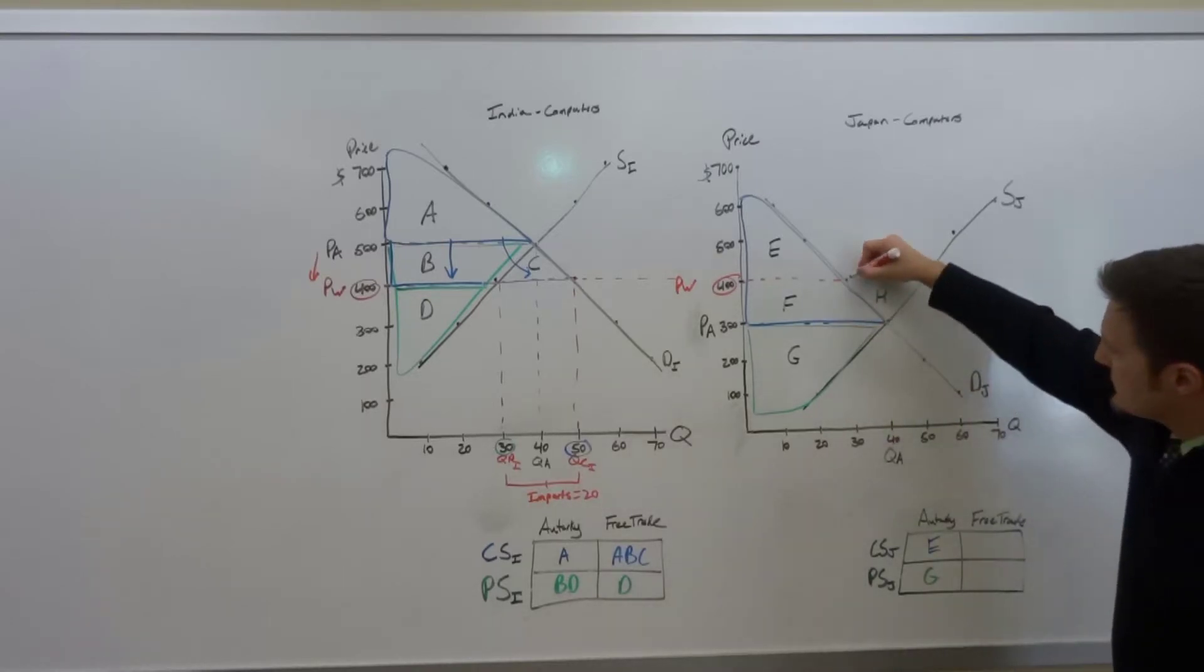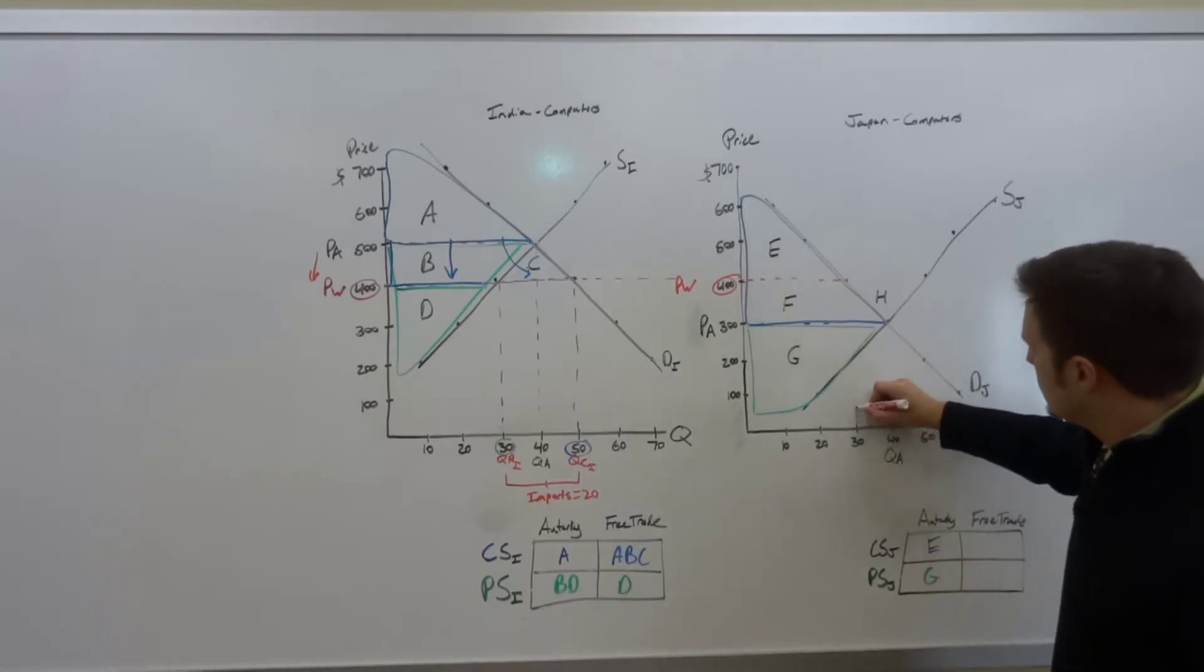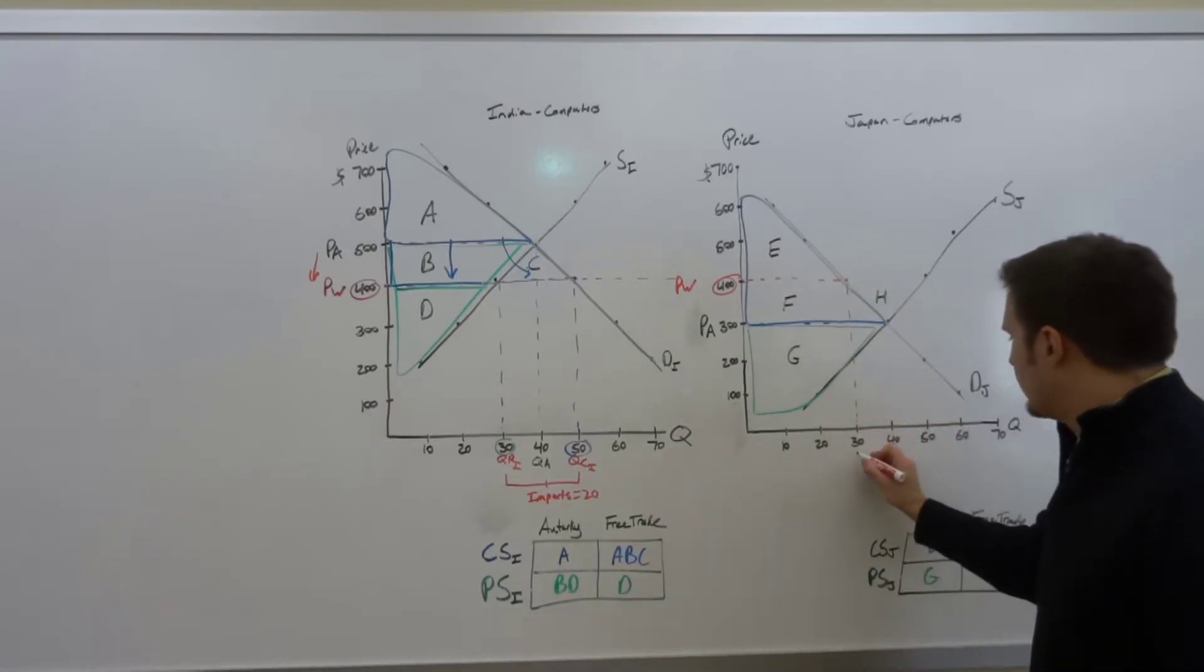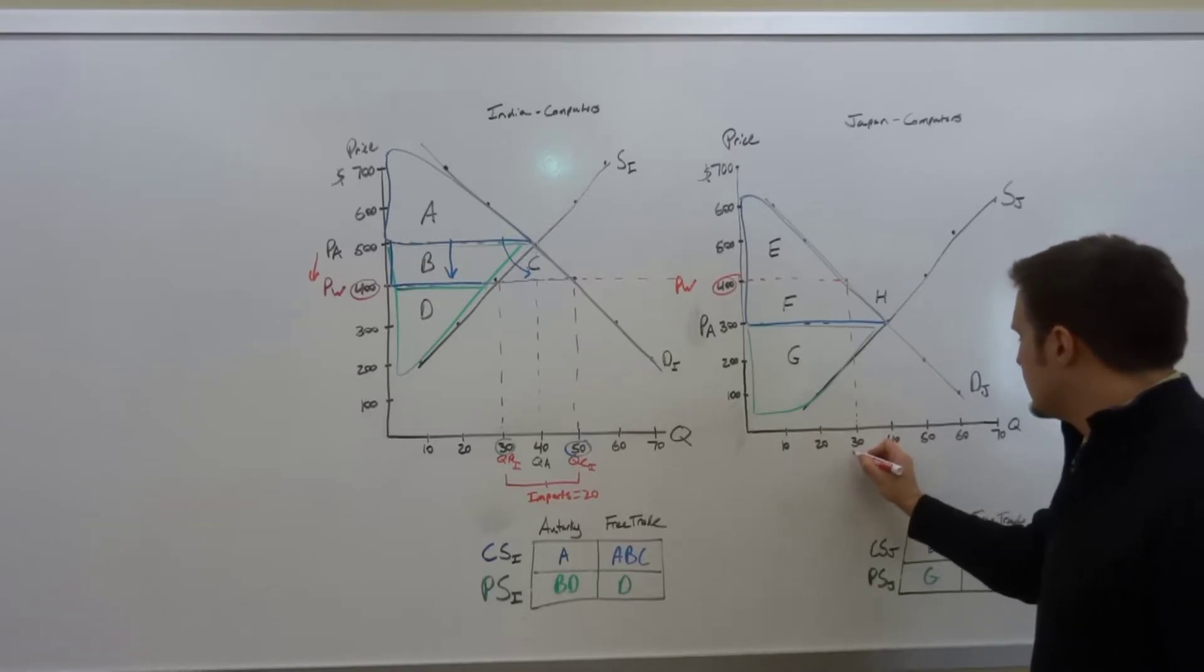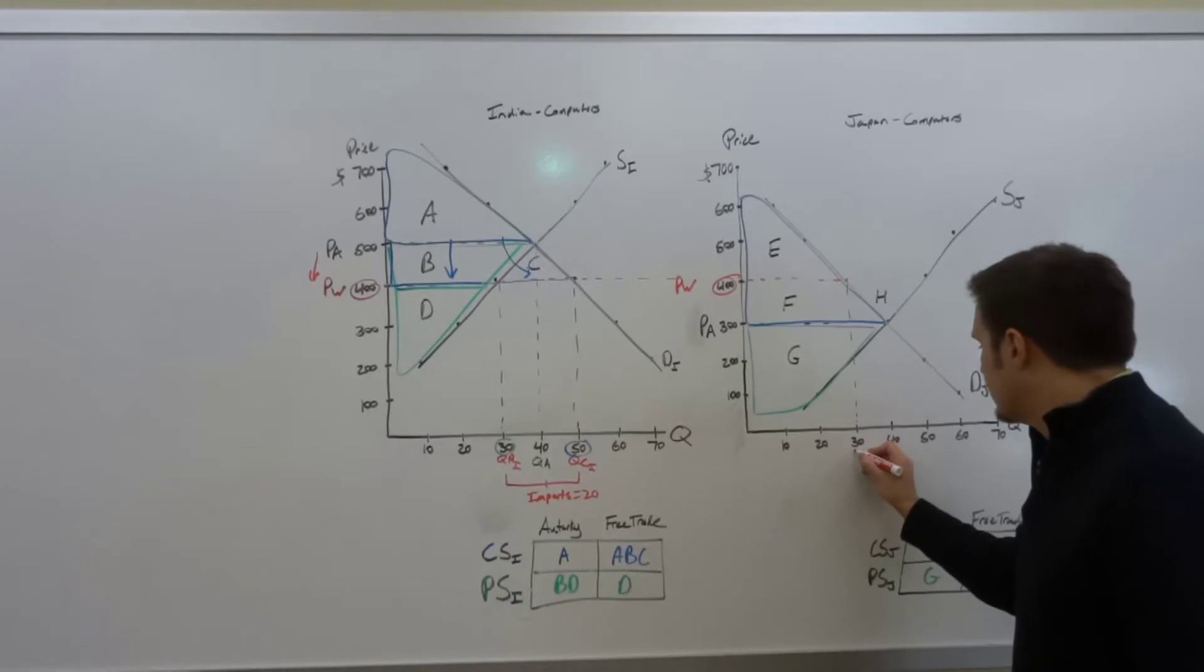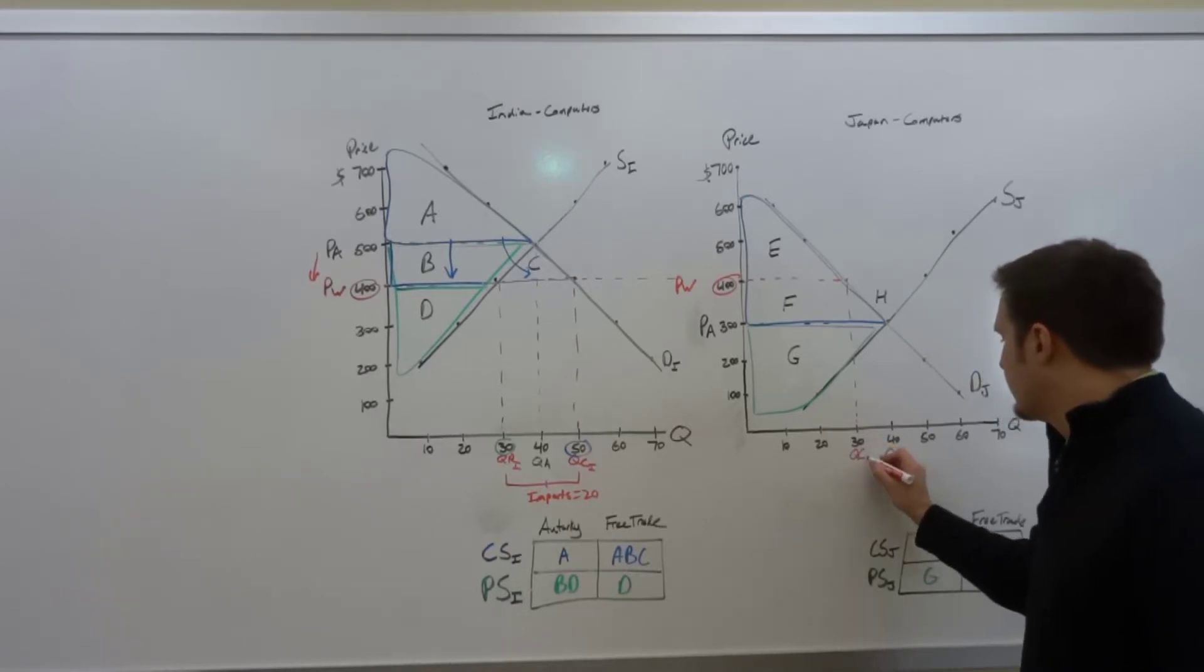So the demand curve is going to intersect with the $400 price at the quantity of 30. So that is to say that the Japanese consumers will now demand or consume a quantity of 30.